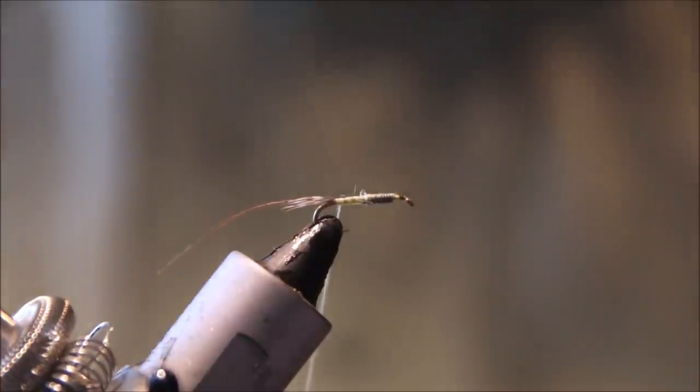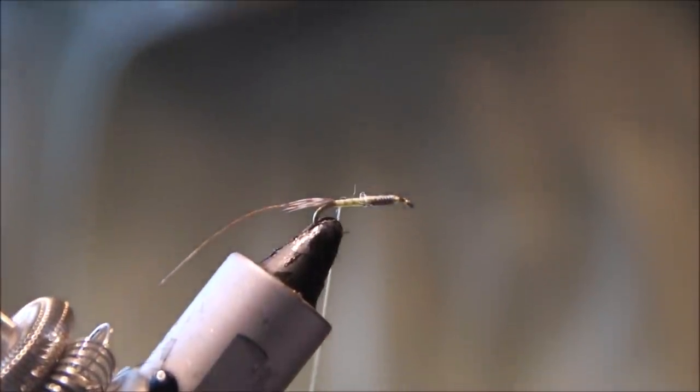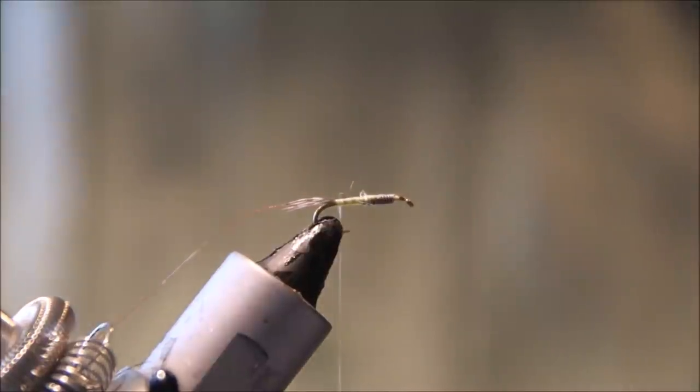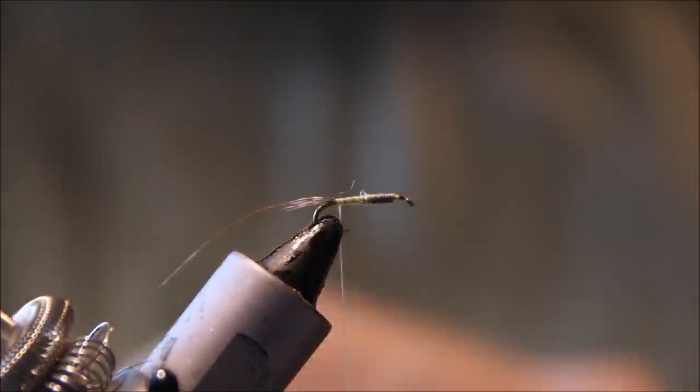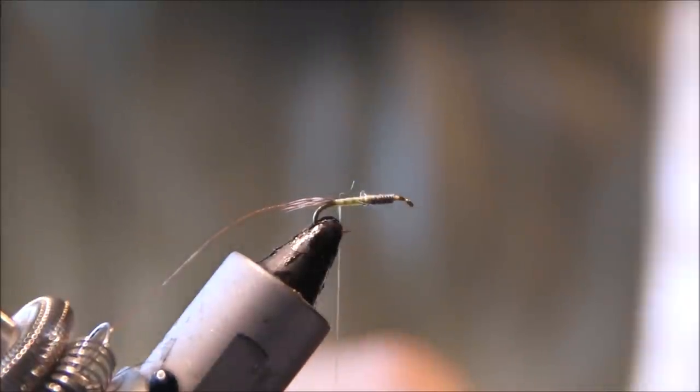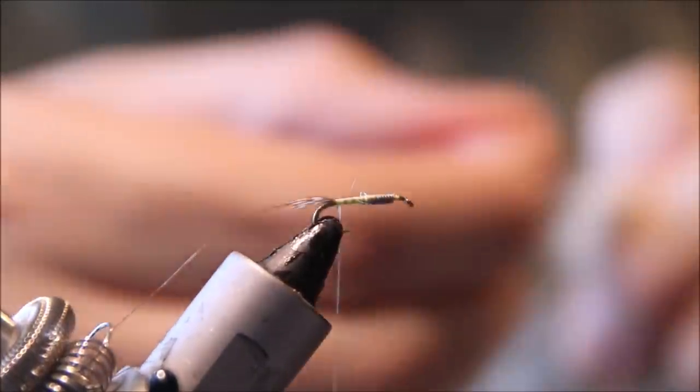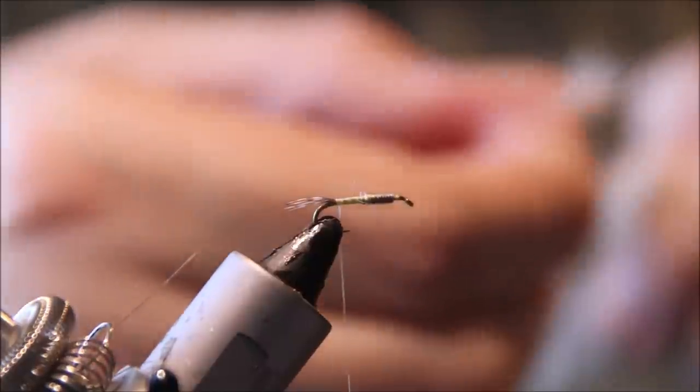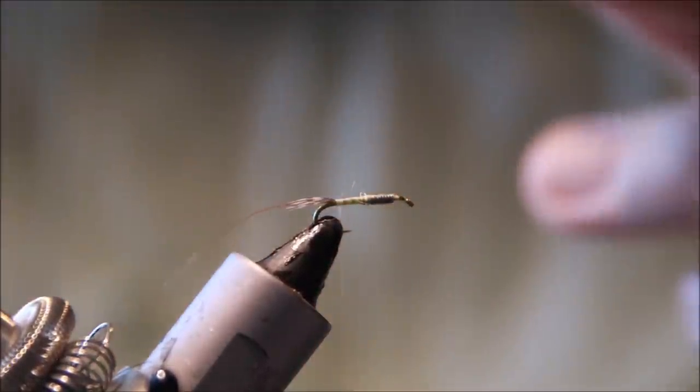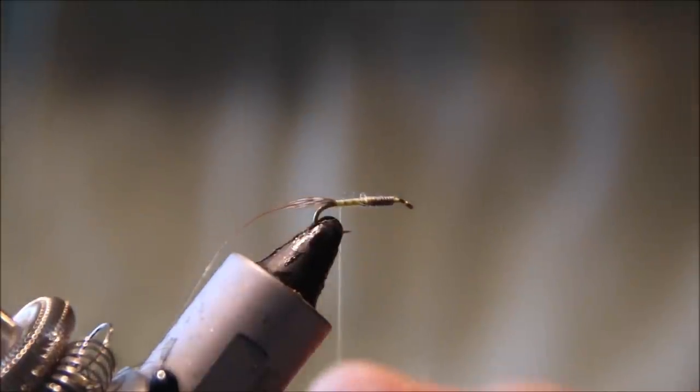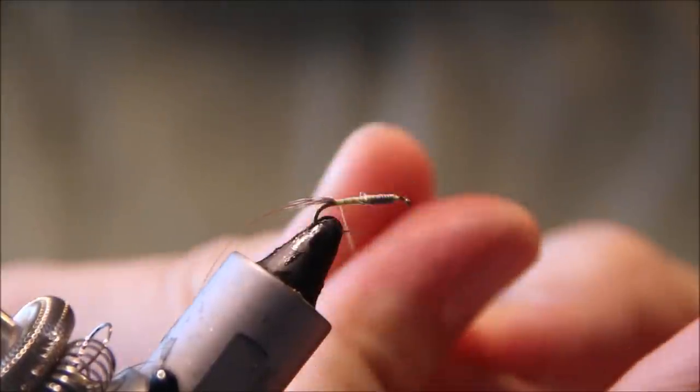For the body I'm using Life Cycle dubbing in the Nymph blend - the color is Cahill Cream. It's a nice dubbing, a blend of natural and synthetic fibers, very good for this kind of thing.